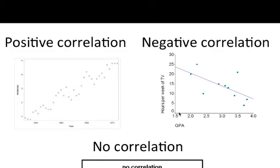However, we can also see that as one variable goes up, the other variable goes down. This is what we call a negative correlation.